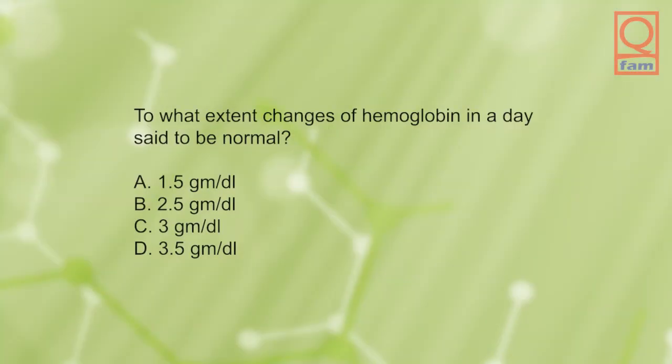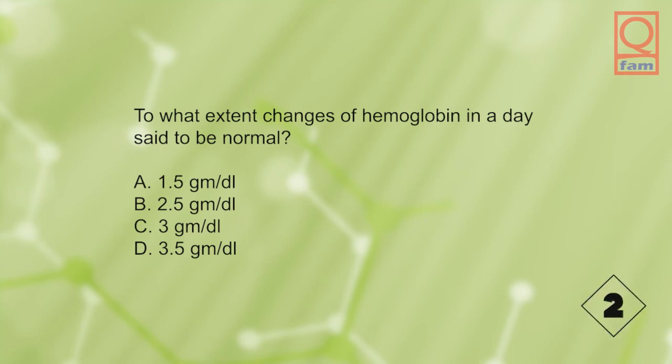To what extent are changes of hemoglobin in a day said to be normal? A) 1.5 grams per deciliter, B) 2.5 grams per deciliter, C) 3 grams per deciliter, D) 3.5 grams per deciliter. The answer is A, 1.5 grams per deciliter.